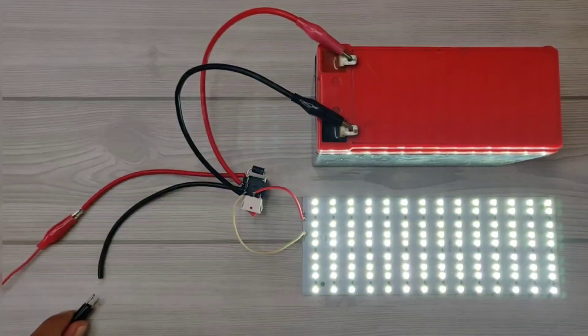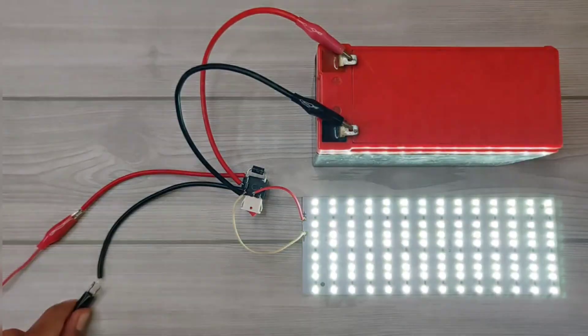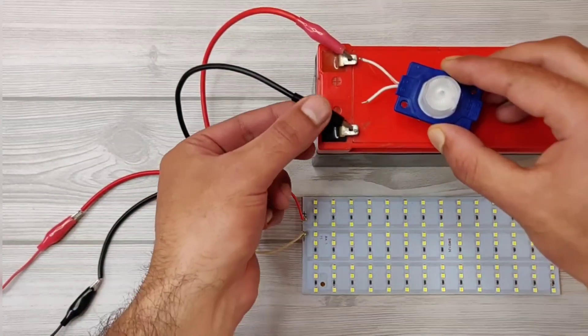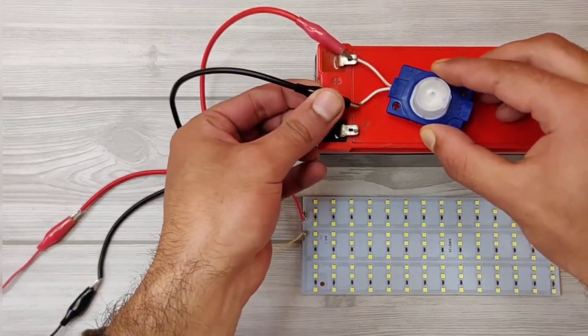And if we disconnect charger, light will turn on automatically. Also circuit is charging the battery, as you can see with this light.